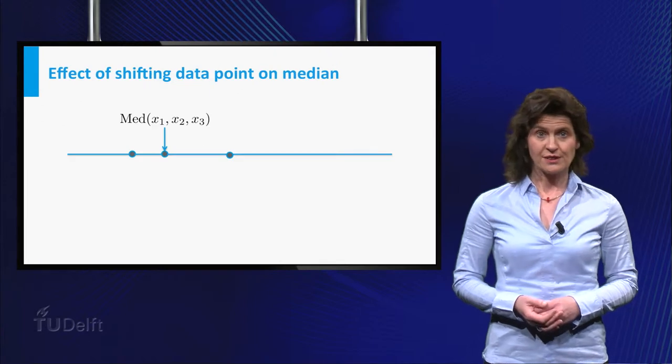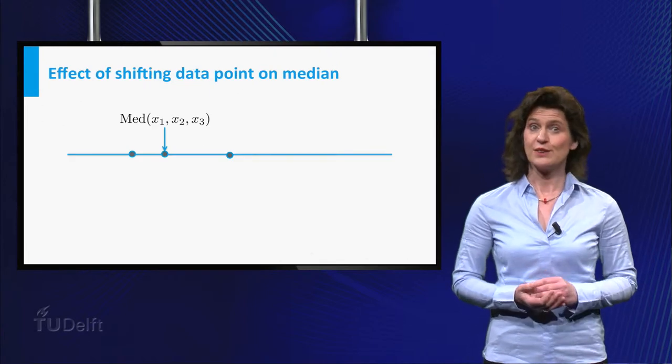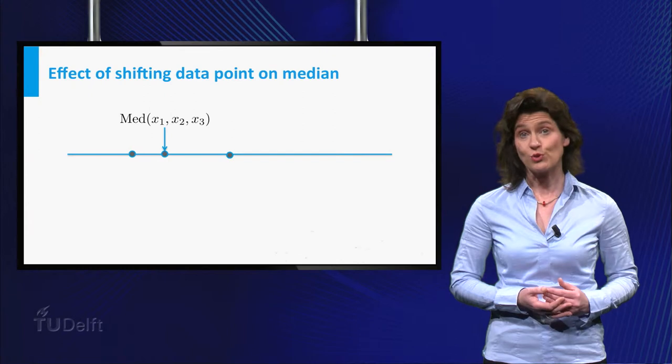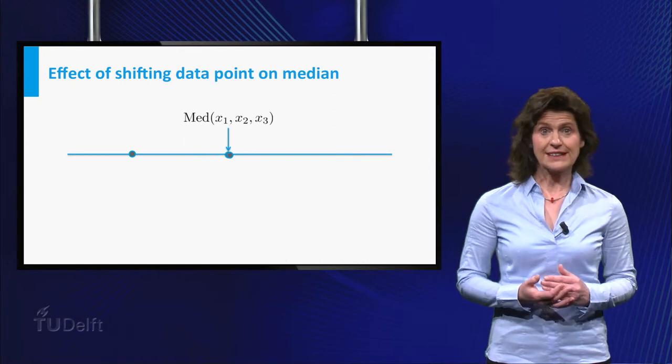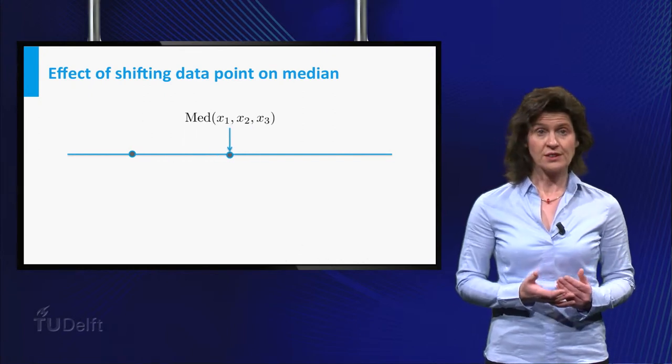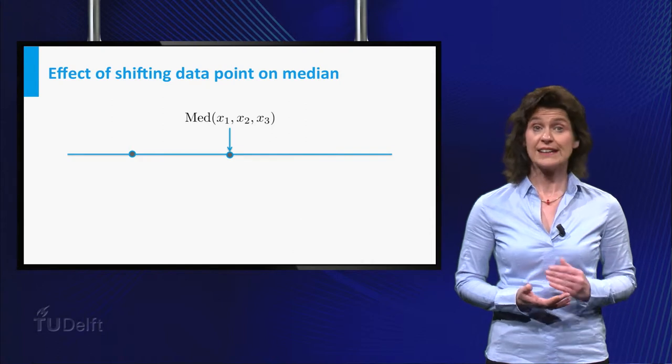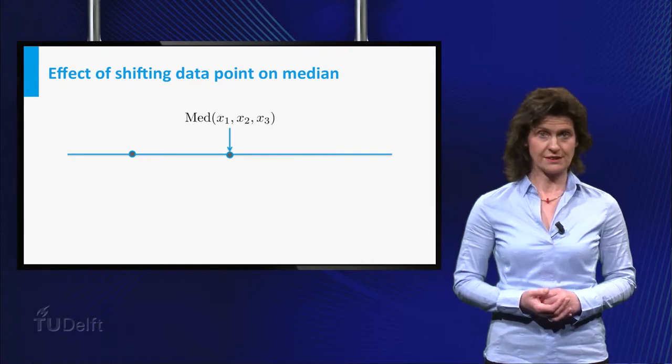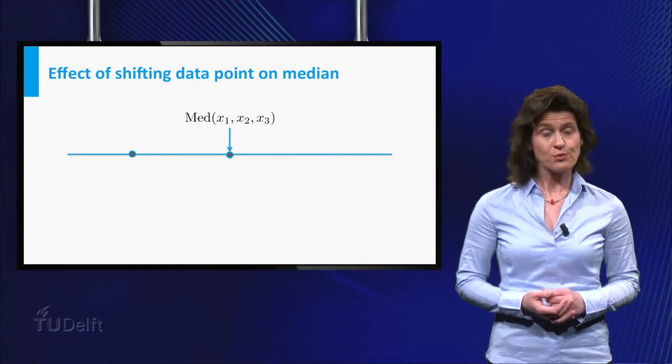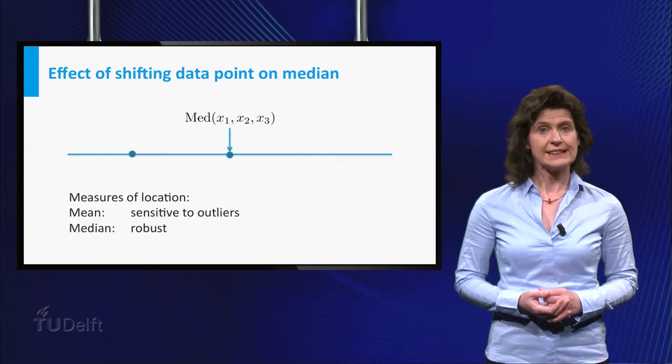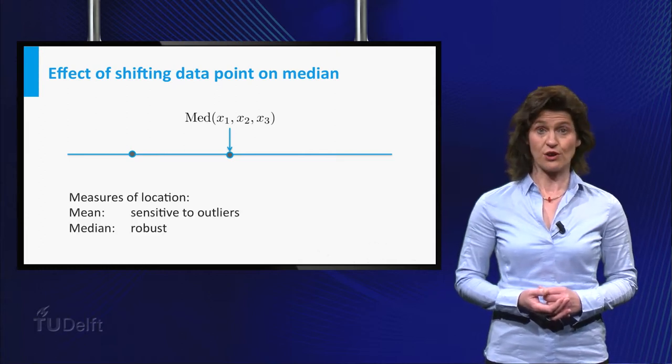Just for fun, look what happens to the median if one of the data points moves to the right. The median can change, but at some point, moving the point further to the right has no effect on the median. The terminology for this property of the median is that it is a robust measure of location.